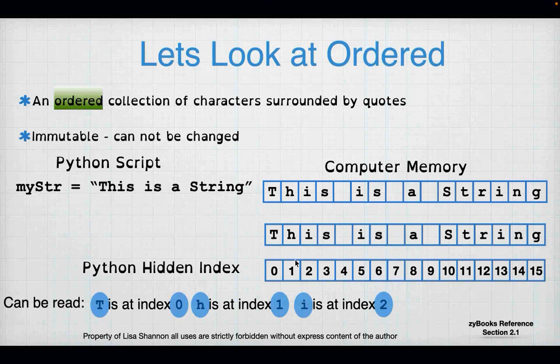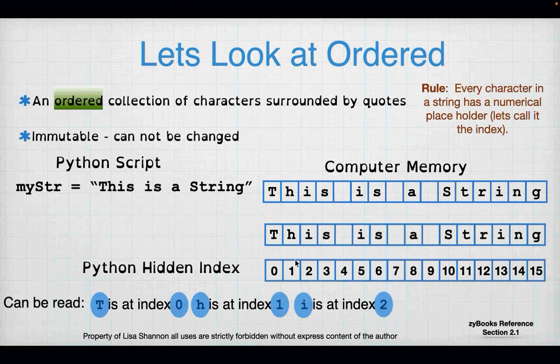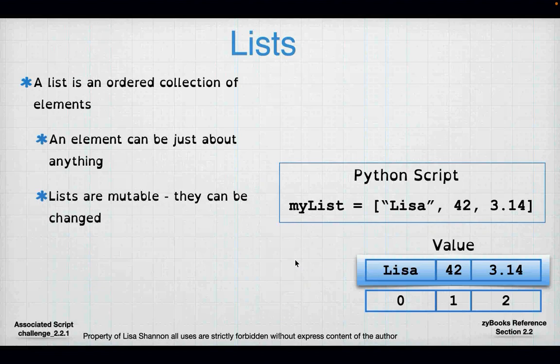Why are these indexes important? Because this is how you're going to get to individual characters in a string, and more importantly, this is how you're going to get to individual elements in a list. You have to understand the concept of a number being associated with every element in a list. For a string, it's a number being associated with every single character. Every character in a string has a numerical placeholder — let's call it the index.